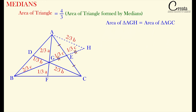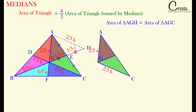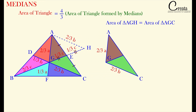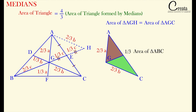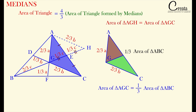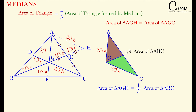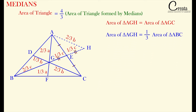Previously we have seen that medians divide the complete area of the triangle into 6 equal parts — these are the 6 equal parts. So we can say the area of these 2 triangles is equal to 1 by 3 times the area of the complete triangle ABC. This is 1 by 6 and this is 1 by 6; on adding we get 1 by 3. So we can say area of triangle AGC is equal to 1 by 3 of area of triangle ABC. And we have proved that area of triangle AGC is equal to area of triangle AGH. So by comparing, area of triangle AGH is equal to 1 by 3 of the area of triangle ABC.